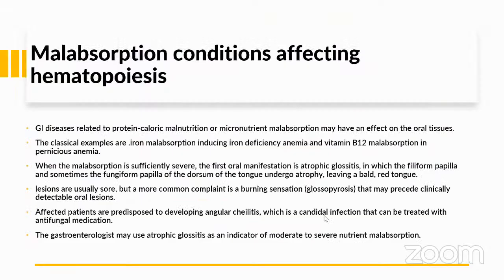GI disease related to protein-caloric malnutrition or micronutrient malabsorption may have an effect on oral tissues. Classical examples are iron malabsorption inducing iron deficiency anemia, and vitamin B12 malabsorption in pernicious anemia. When malabsorption is sufficiently severe, the first oral manifestation is atrophic glossitis — in which filiform papillae and sometimes fungiform papillae of the dorsum of the tongue undergo atrophy, leaving a bald, red tongue. Lesions are usually sore, but a more common complaint is a burning sensation that may precede clinically detectable oral lesions. Affected patients are predisposed to angular cheilitis — a candidal infection treatable with antifungal medications.